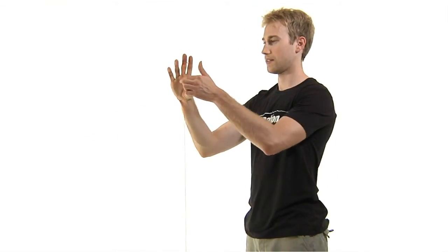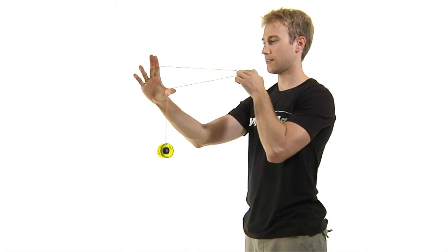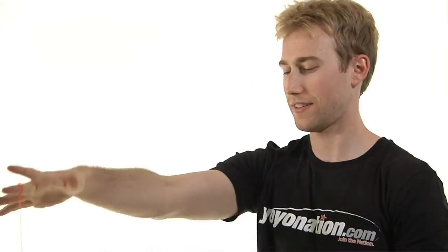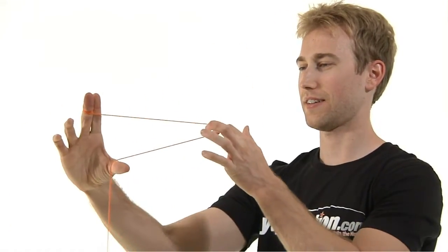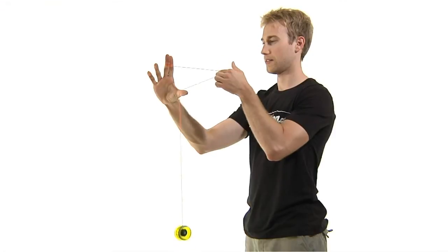First throw a sleeper. Make a C with your throw hand so that the thumb rests against the string. Using your non-throw hand, hook the string in the middle of the C with your index finger and pull the string back toward you, like you were drawing the string of a bow and arrow.